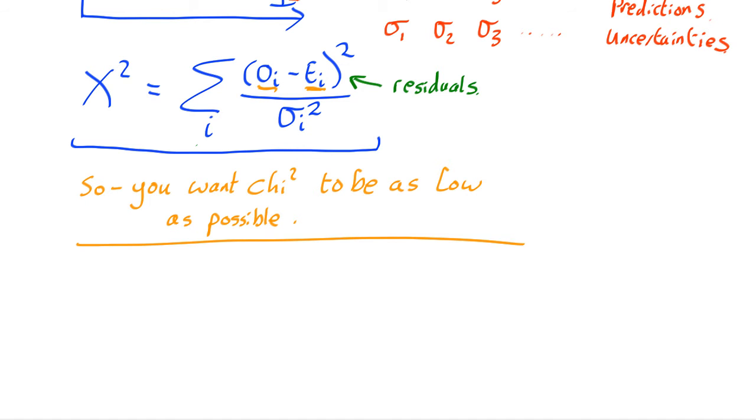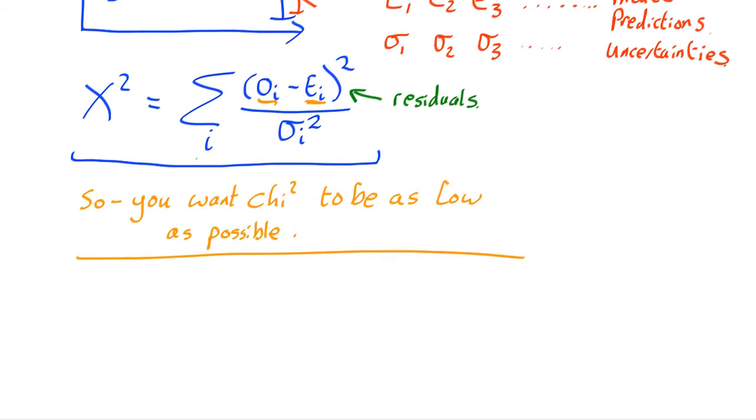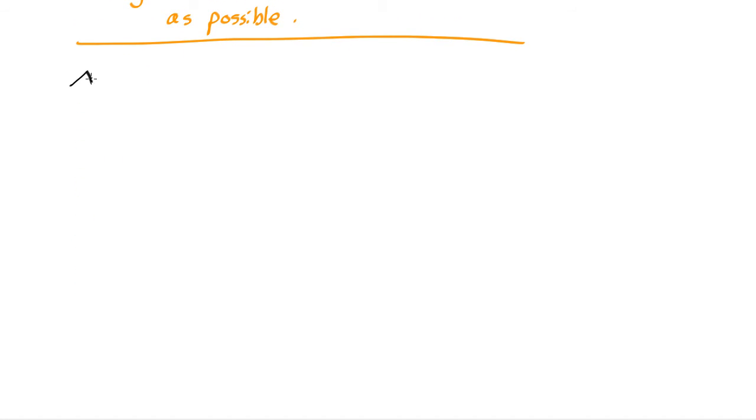But it is possible for the chi-squared value to be too low. So how low does it need to be if you consider the fit to be good? You can have too good a fit.